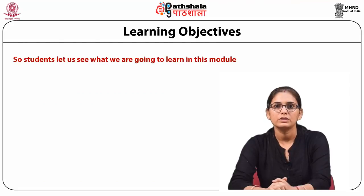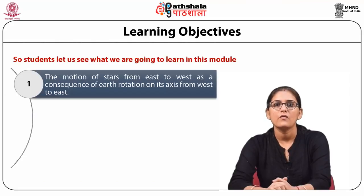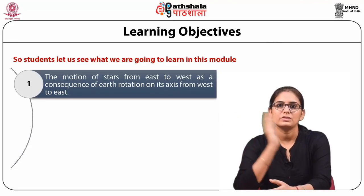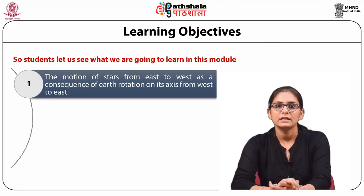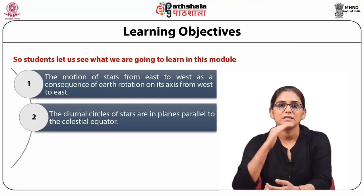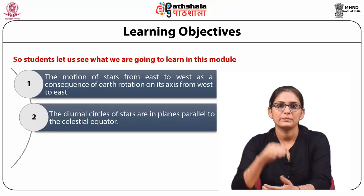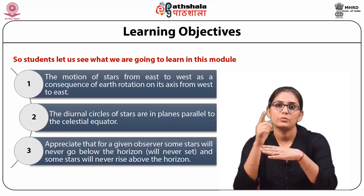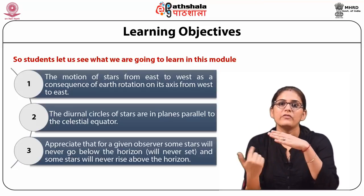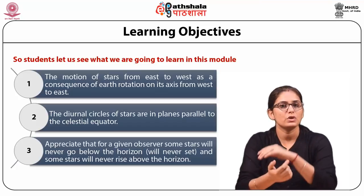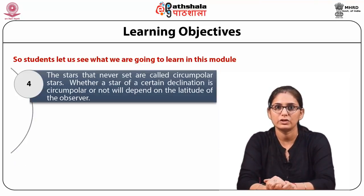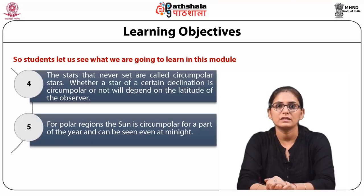After completing this module, the students will be able to understand why stars and celestial objects describe circular orbits from east to west, learn that the diurnal circles of stars are in planes parallel to the celestial equator, explain why some stars are circumpolar for an observer and why some are never visible, derive the condition for a star to be circumpolar, and understand that the polar regions see the Sun as circumpolar for part of the year — visible even at midnight.